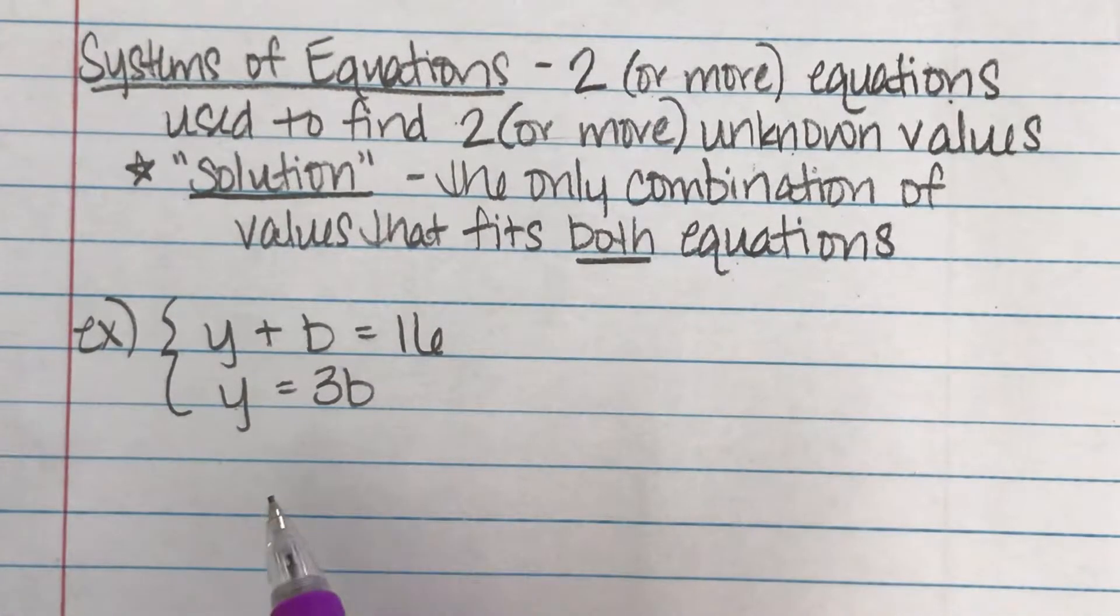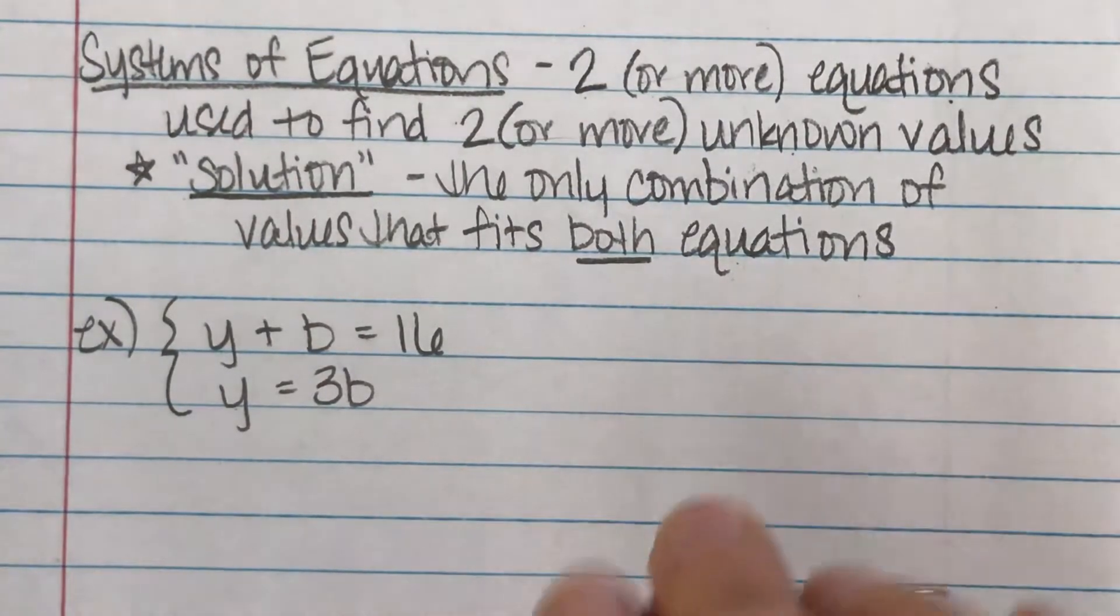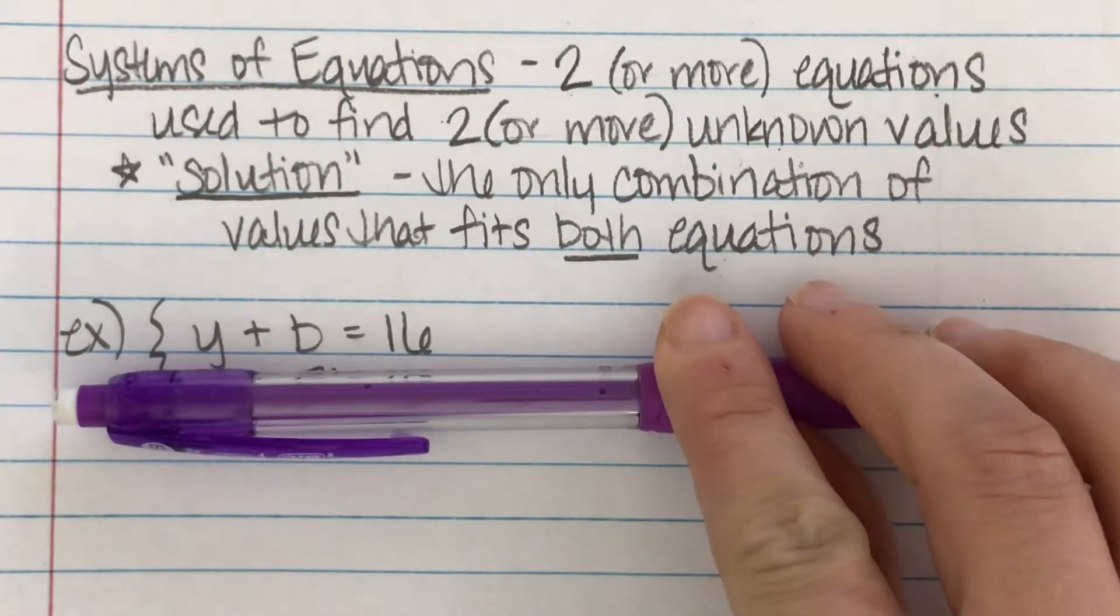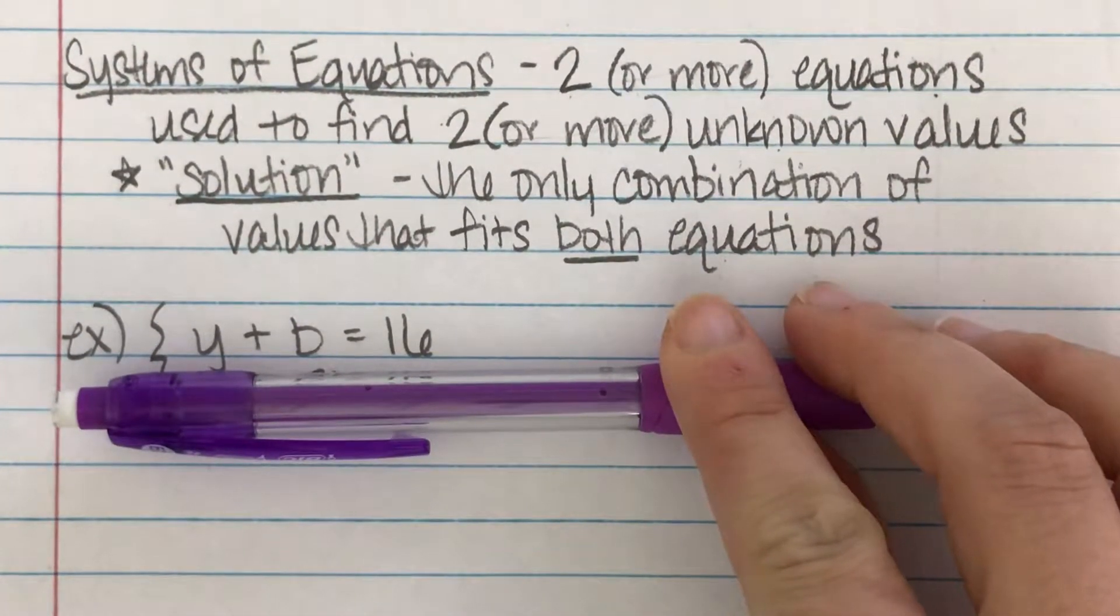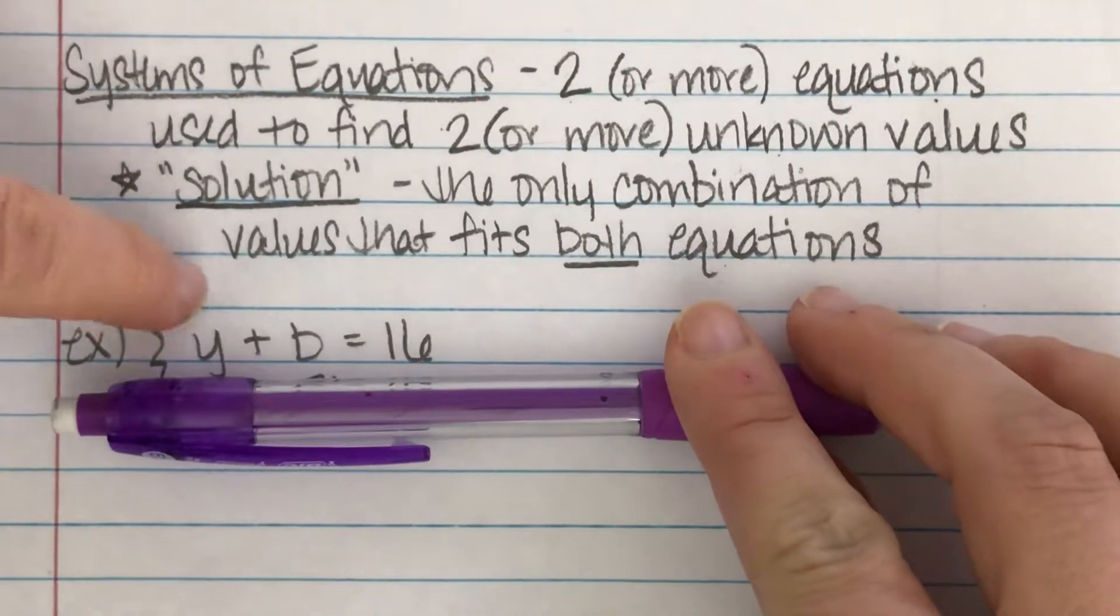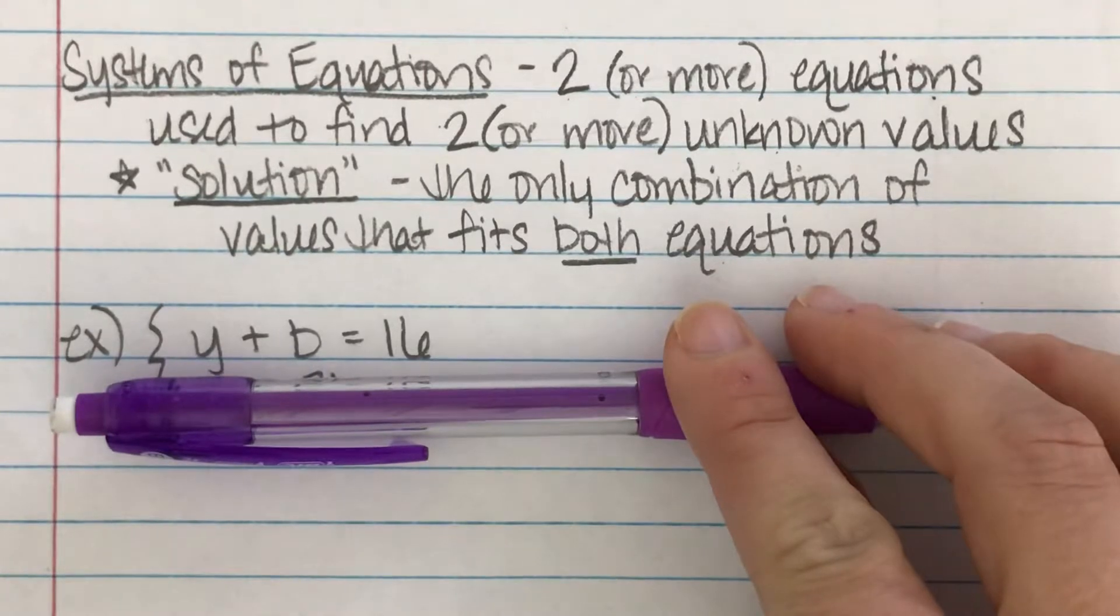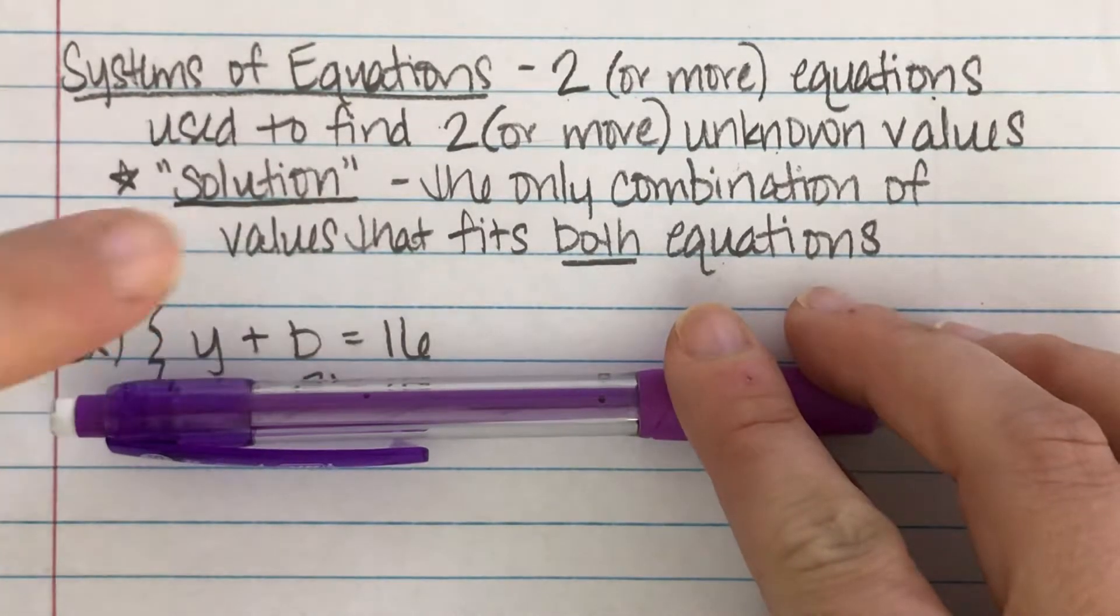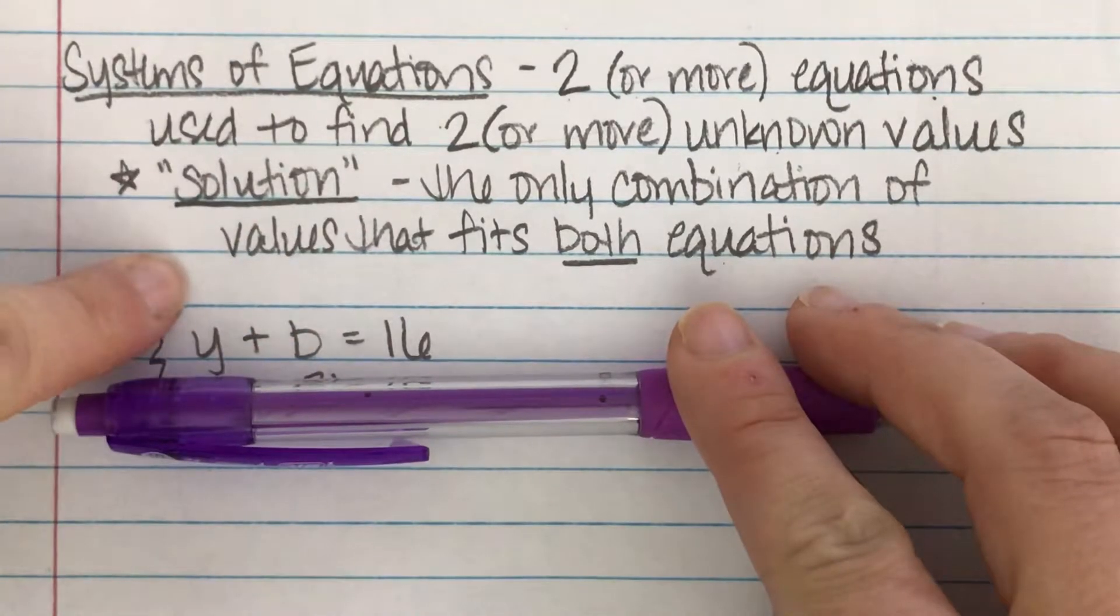Here's, you've got two unknown values, right? We don't know how many yellow there are. We don't know how many blue there are. If all they told us is that there were 16 candies, there are a lot of combinations of yellow and blue that would make 16 total candies. It could be that we've got eight and eight, we have even numbers.